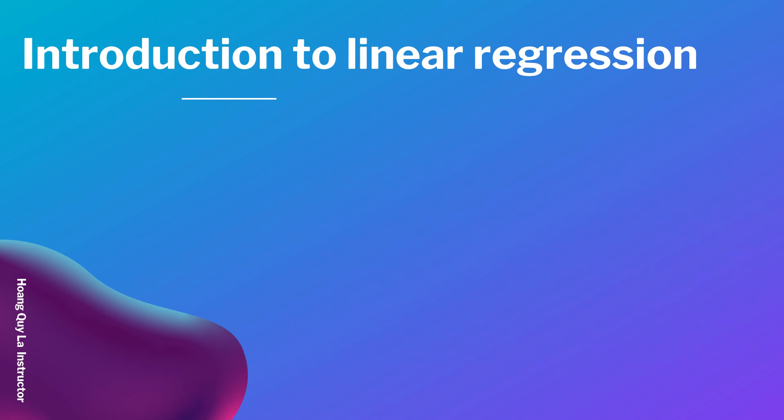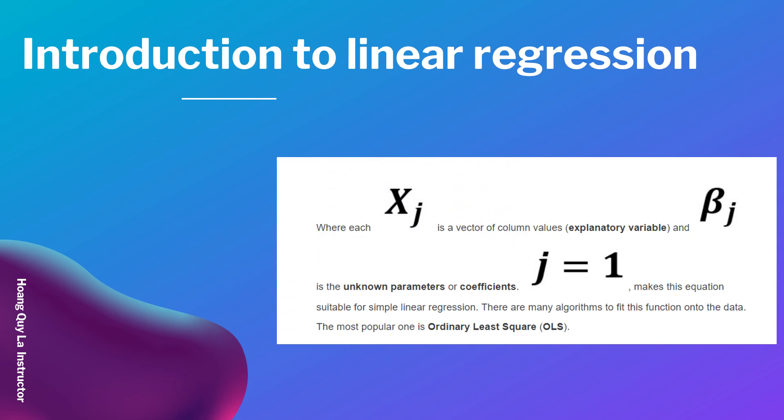Now let's explain what xj and beta j mean from the equation mentioned before. xj is the vector of column values (the explanatory variable), and beta j is a known parameter or coefficient. When j equals 1, this equation is suitable for simple linear regression.